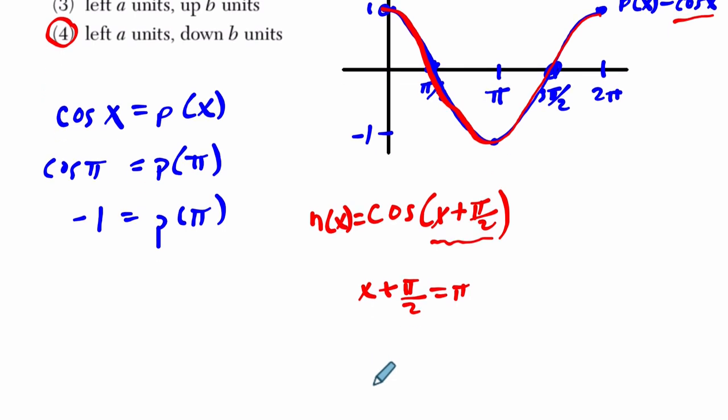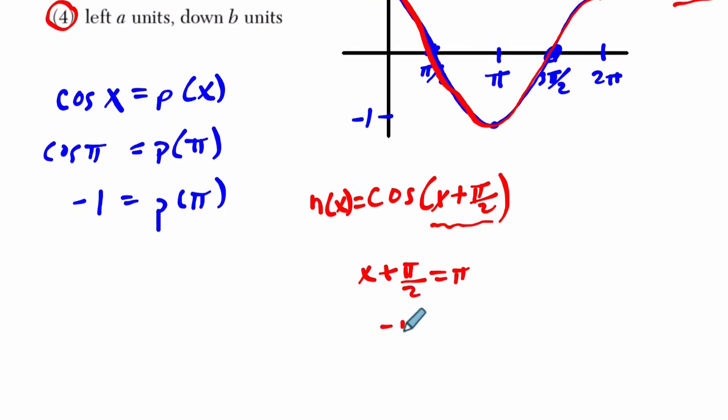So in order to find what x value does that, we would subtract π/2 from both sides. And there's that movement to the left. And that would mean one whole π minus a half of π is one half π, or π/2. In other words, if we plug in π/2 for x, then we get π/2 plus π/2. That's π. The cosine of π is negative 1.